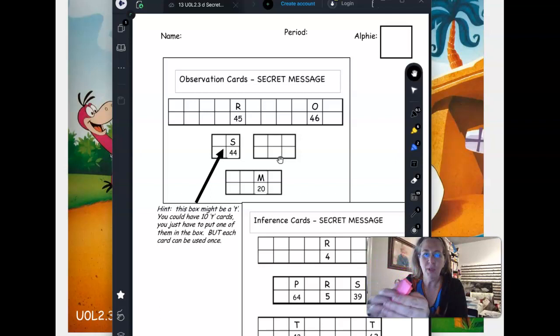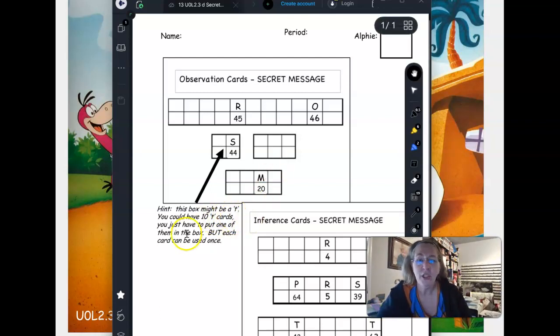What you're going to do is try to figure out what the message is. The cards can only be used once. You can see the hint on here that says 'this box might be a T.' You could have ten T cards, so you just have to put one of them in the box. So it might be T and card 5. The cards can only be used once, so you can take that card that you just used and put it to the side.